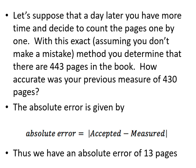So what's the error? The absolute error is given by the accepted value minus the measured value, placed in absolute value bars — because we want the error to always be a positive number. Taking 443 minus 430, we find an absolute error of 13 pages.